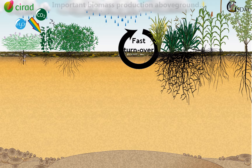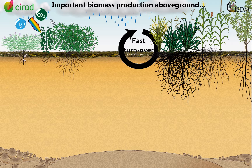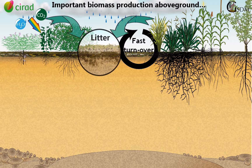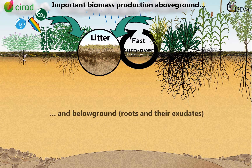The above-ground biomass, produced in abundance by the diversity of plants, regularly flows into the surface litter, while the below-ground biomass directly provides the soil with organic matter, such as living roots and their exudates.